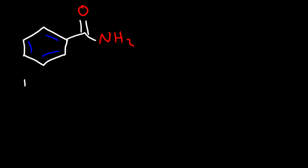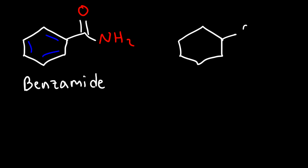Next up, we have a benzene ring with an amide functional group. Benzene plus an amide — this is called benzamide. And if we have a benzene ring with a nitrile functional group, this one is simply called benzonitrile.